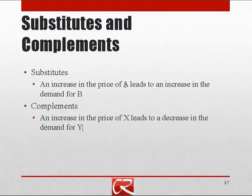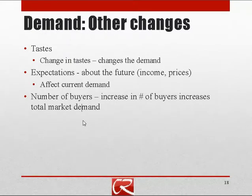For each of these, if the price change goes in the other direction the demand shift also goes in the other direction. A decrease in the price of A leads to a decrease in the demand for B if they're substitutes, and a decrease in the price of X leads to an increase in the demand for Y if they're complements. There are other things that can influence the overall level of demand — sometimes things become fashionable or trendy, causing the demand curve to shift right, or less fashionable, shifting it left.